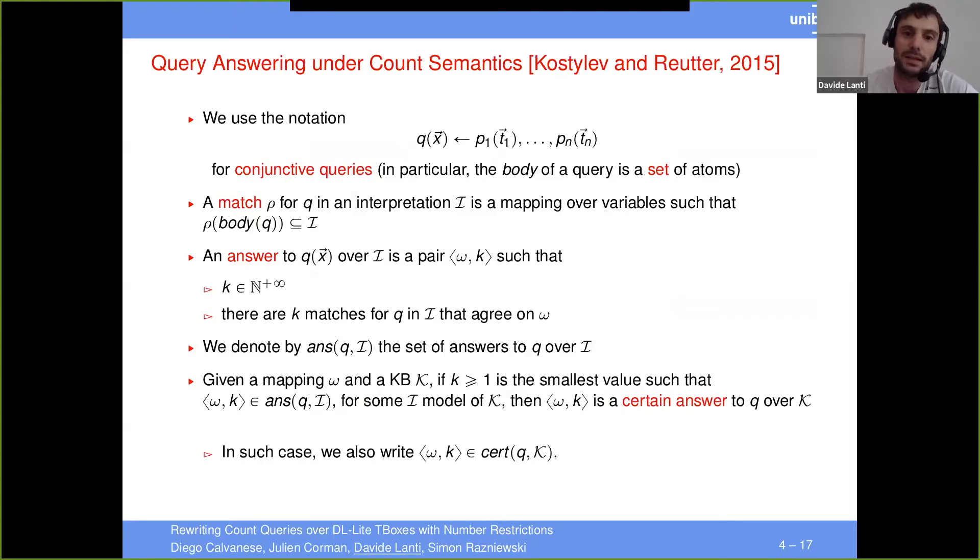Here, the body of a query is a set of atoms. And then we consider a match row for Q in interpretation I. It's just a mapping such that when you apply the match over the body of the query, you get a subset of the interpretation. Essentially, the interpretation satisfies the body.